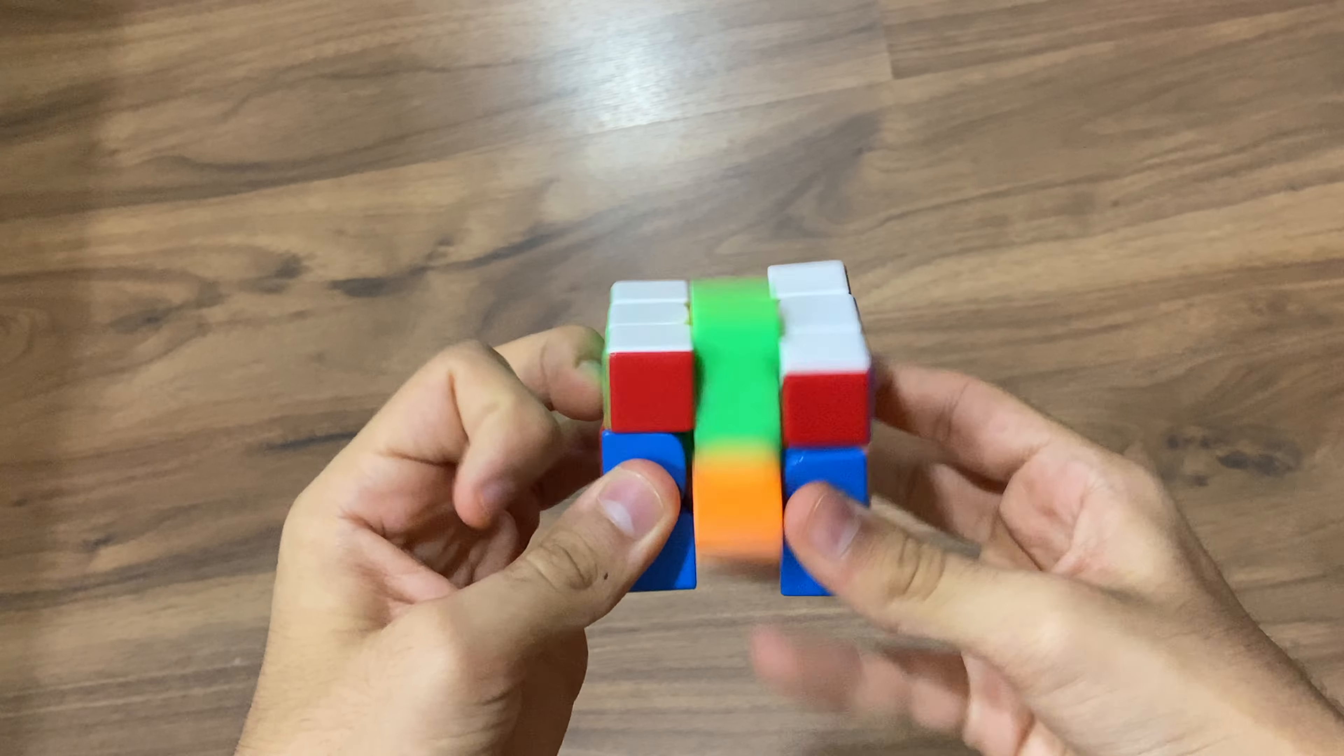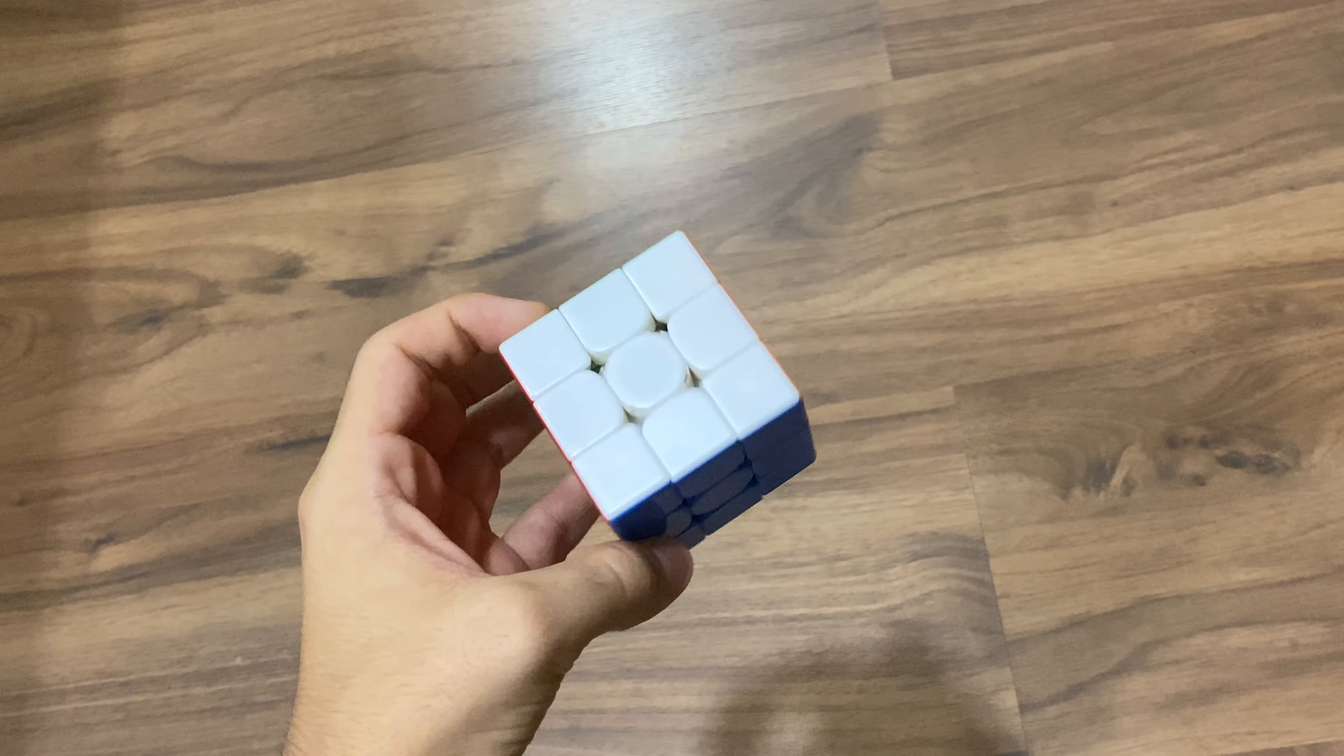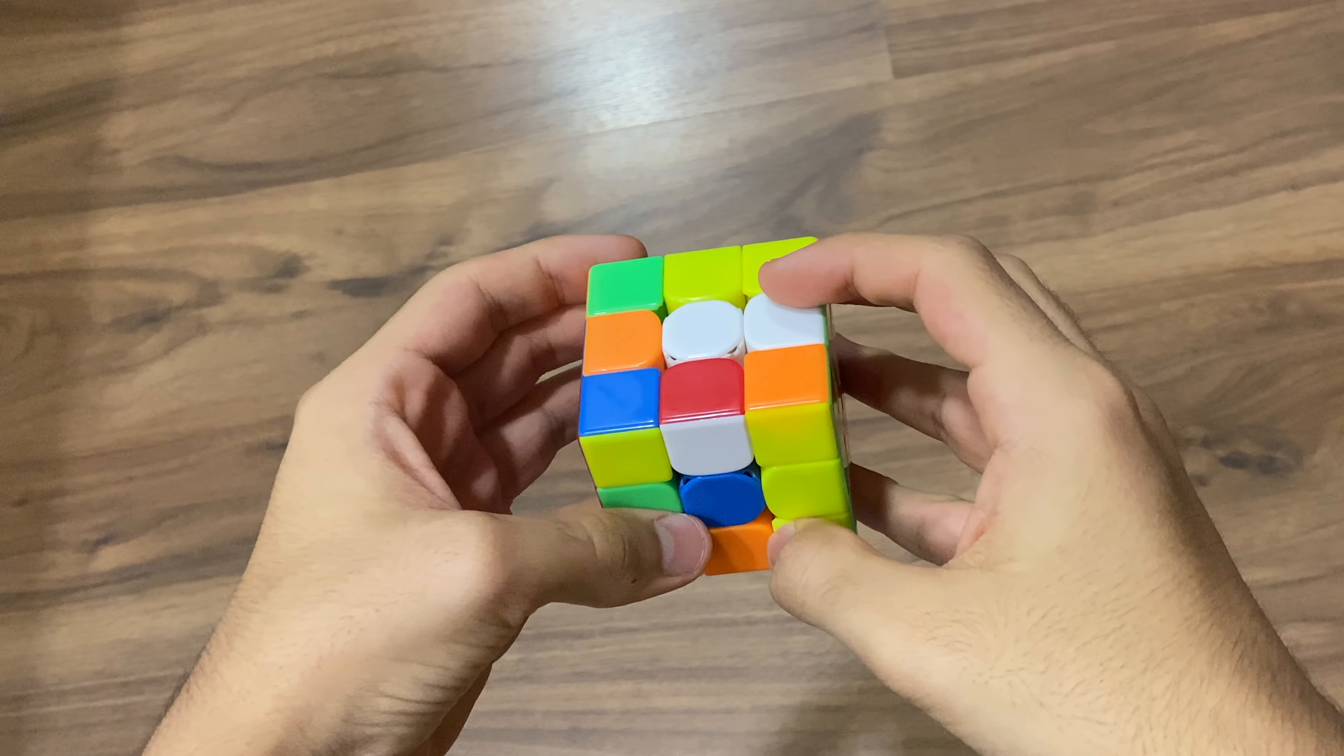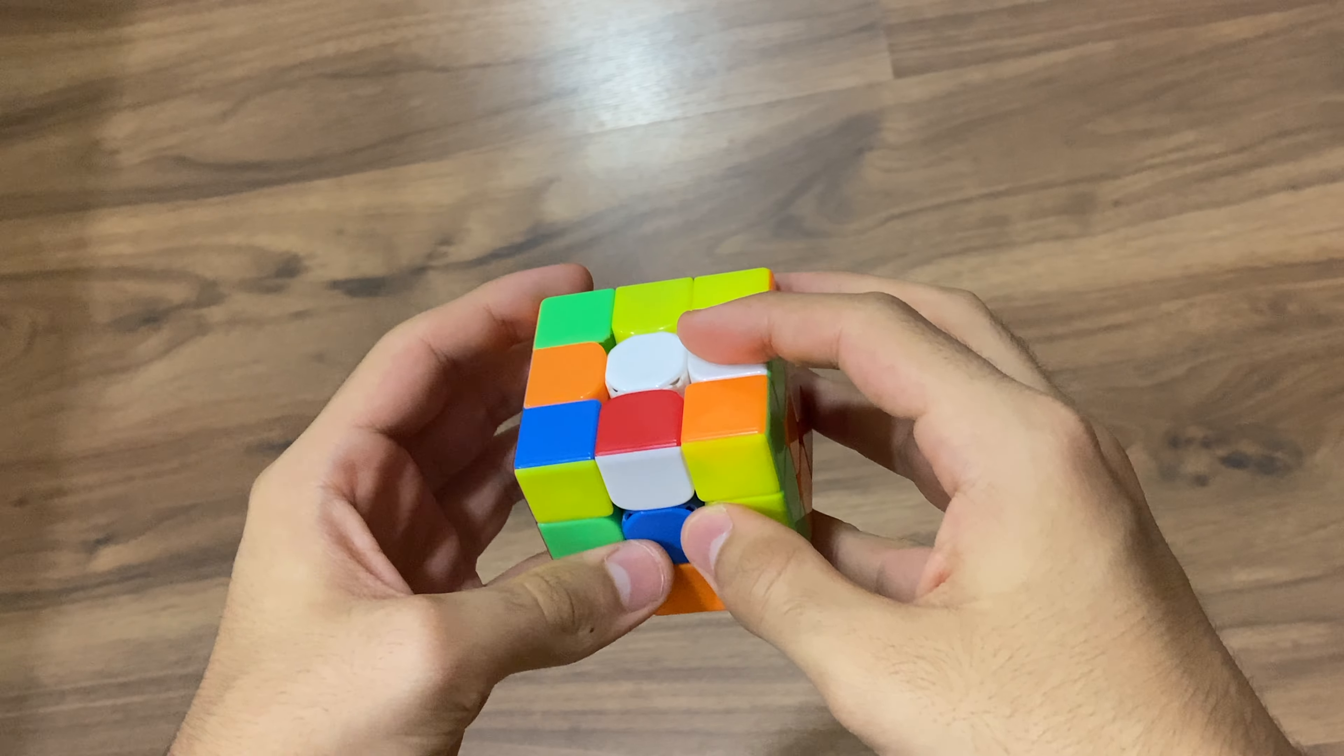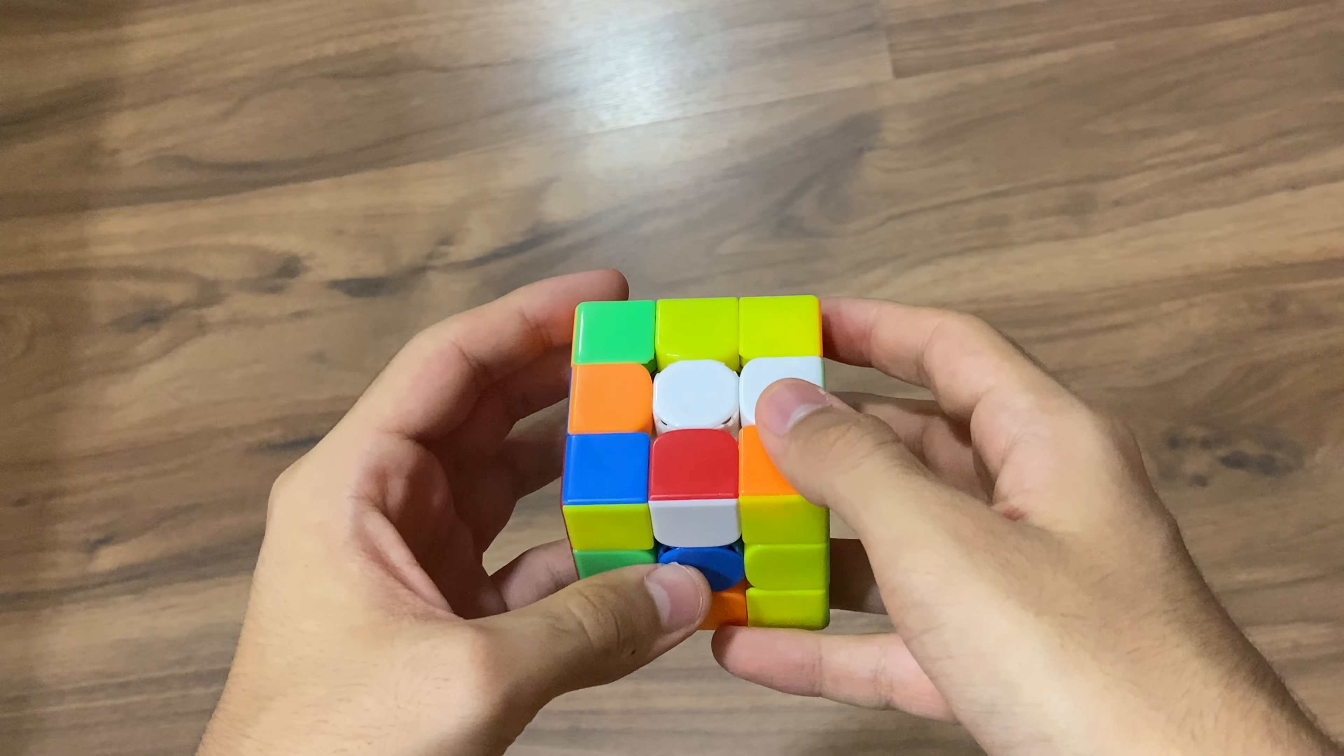And then a U, and then we had a U-perm and it was solved, 5.84. So yeah, as you saw over here this was a very, very easy scramble but I'm so glad I didn't end up messing it up like I usually would.